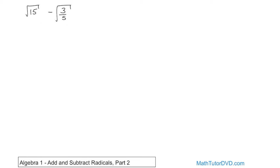The first thing we want to do is see if we can simplify these radicals. The square root of 15 can be written as 3 times 5, but I can't break 3 or 5 down anymore, and there's no pair, so I can't simplify this. But I look at the 3 fifths and remember that when I have a square root of a fraction, I can write it as square root of 3 over square root of 5.